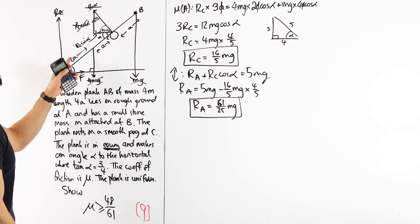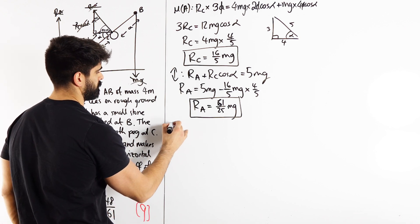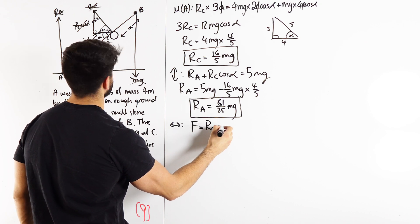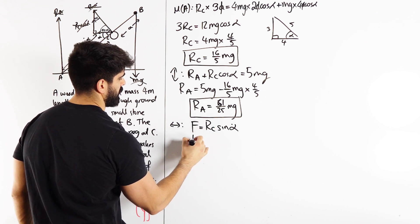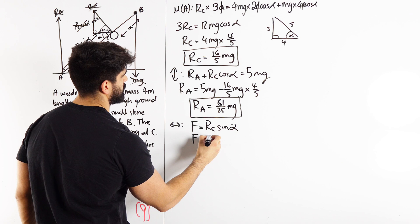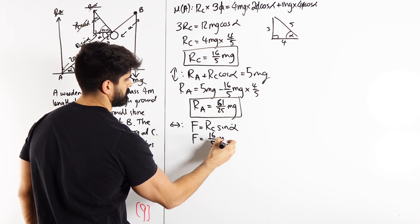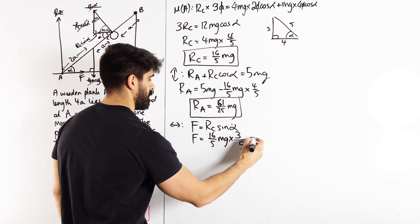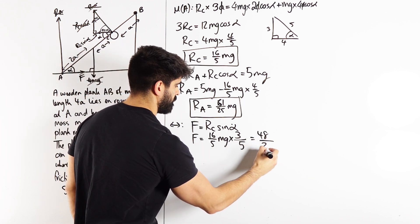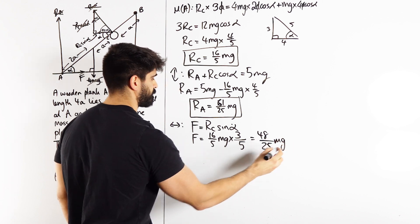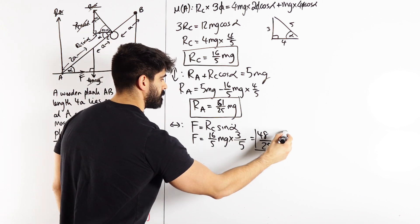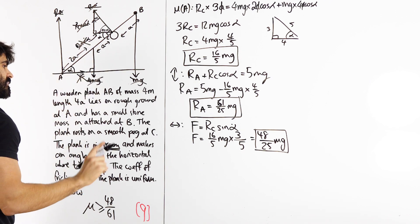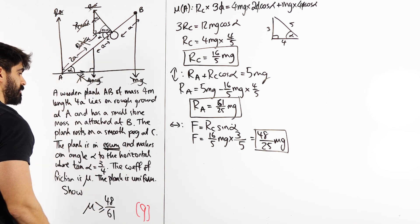So now we have the left and the right, F is RC sin alpha. F is RC sin alpha. F is RC sin alpha.